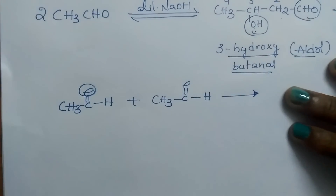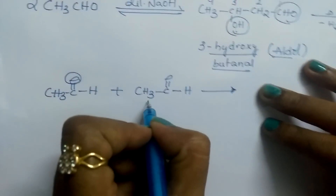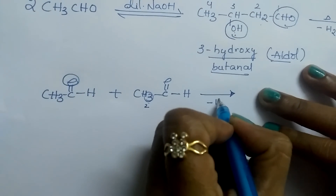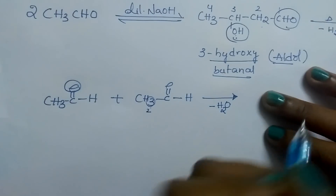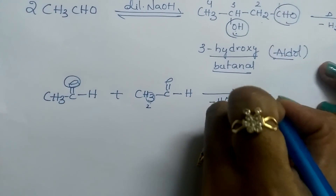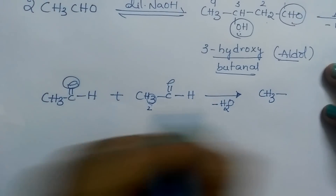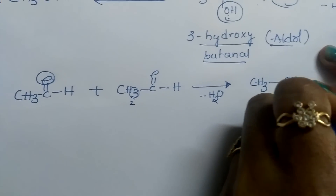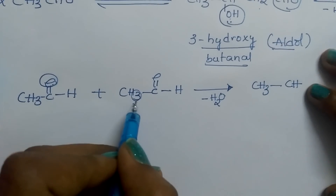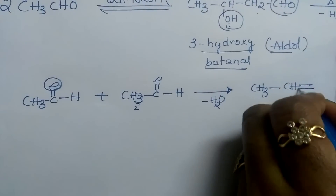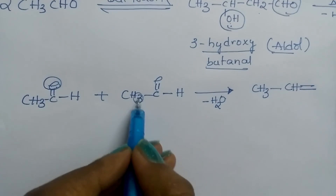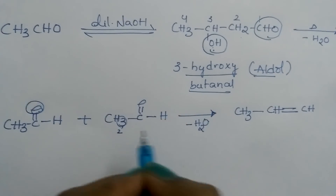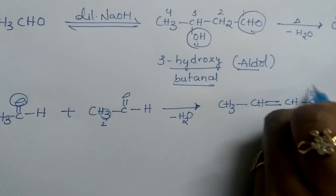First, remove one O from the aldehyde and remove 2 hydrogens from the alpha carbon — this O and 2 H's go as H2O. Then write CH3 and C, with one hydrogen remaining on that carbon. Whenever you remove 1 oxygen and 2 hydrogens, put a double bond here. After removing 2 hydrogens, only 1 hydrogen is left on that carbon. Next to that is C double bond O.